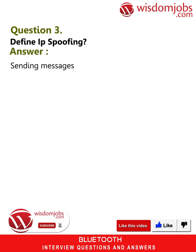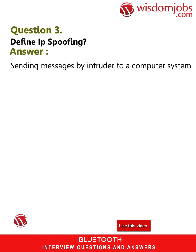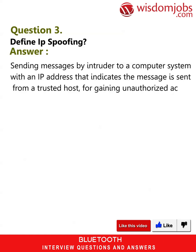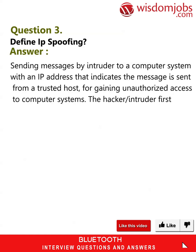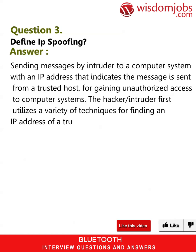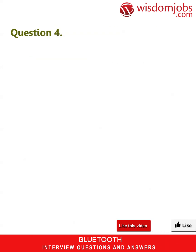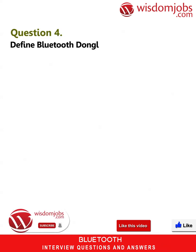Question 3: Define IP spoofing. Answer: IP spoofing involves sending messages by an intruder to a computer system with an IP address that indicates the message is sent from a trusted host, for gaining unauthorized access to computer systems. The hacker first utilizes a variety of techniques for finding an IP address of a trusted host, then modifies the packet headers to give an illusion that the packets are sent from that host.